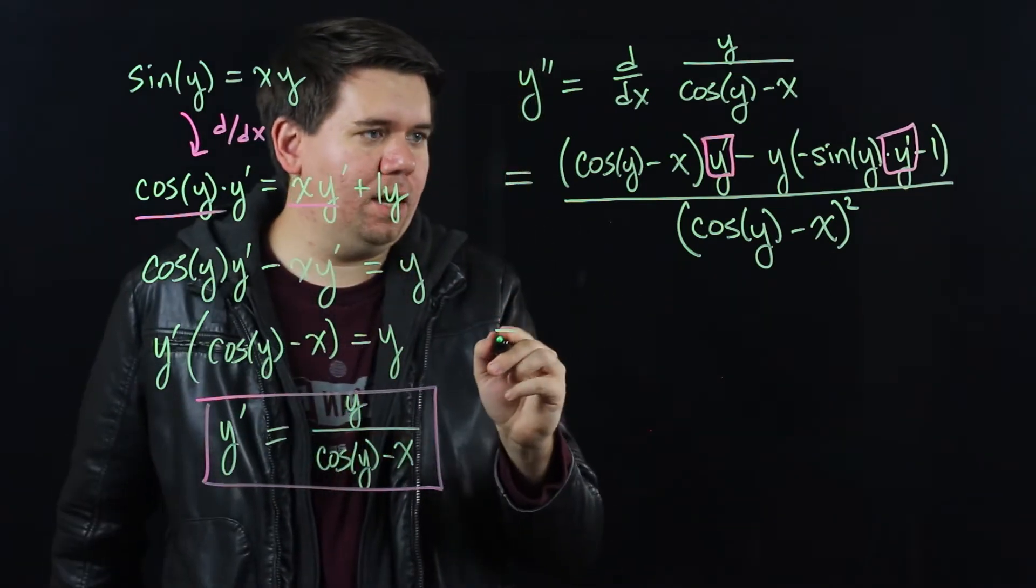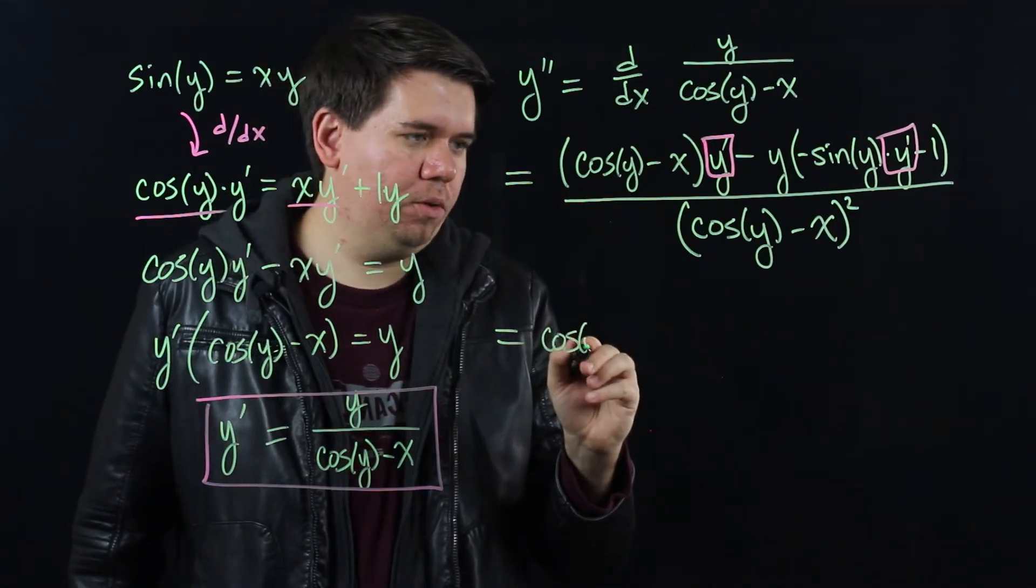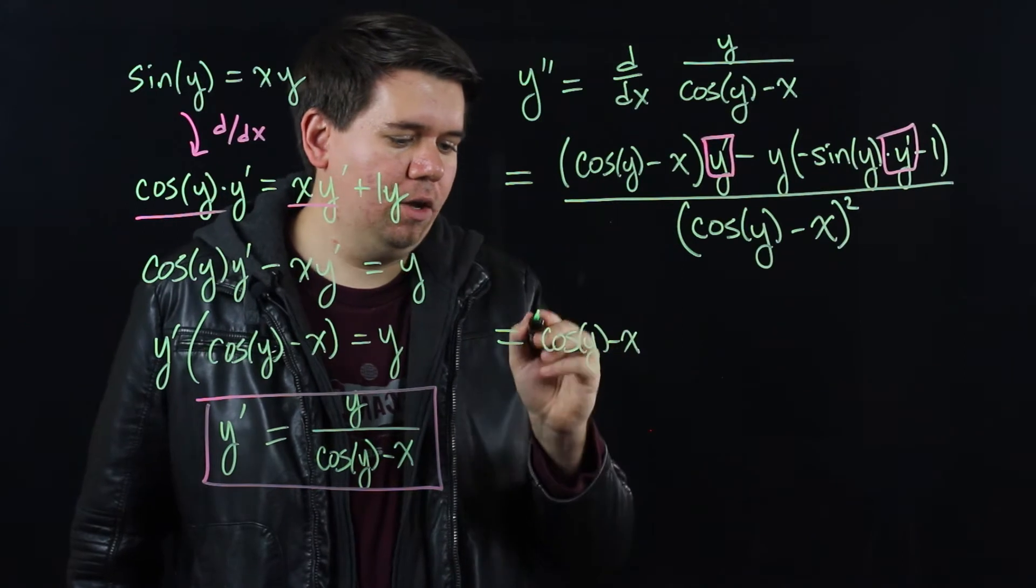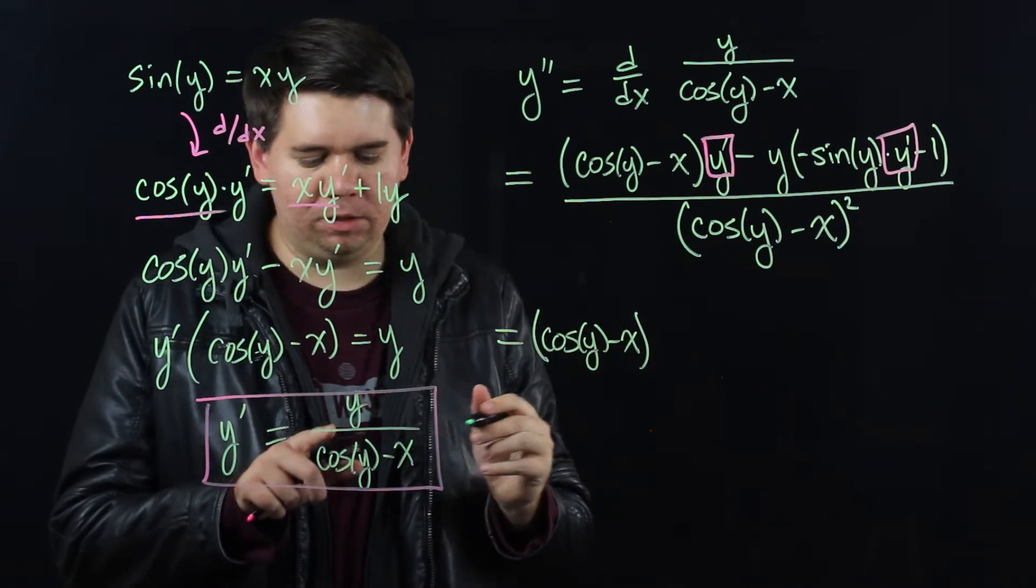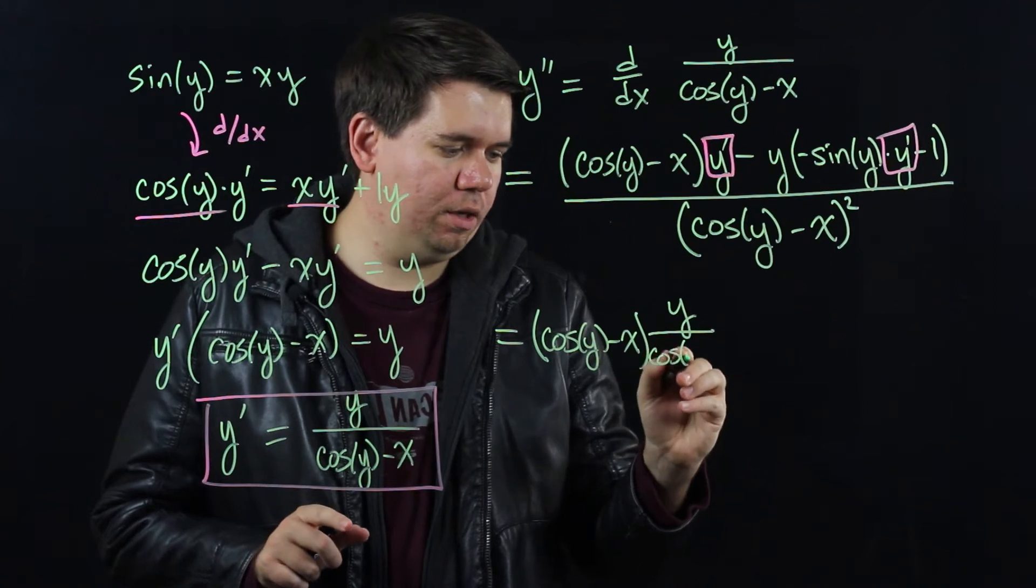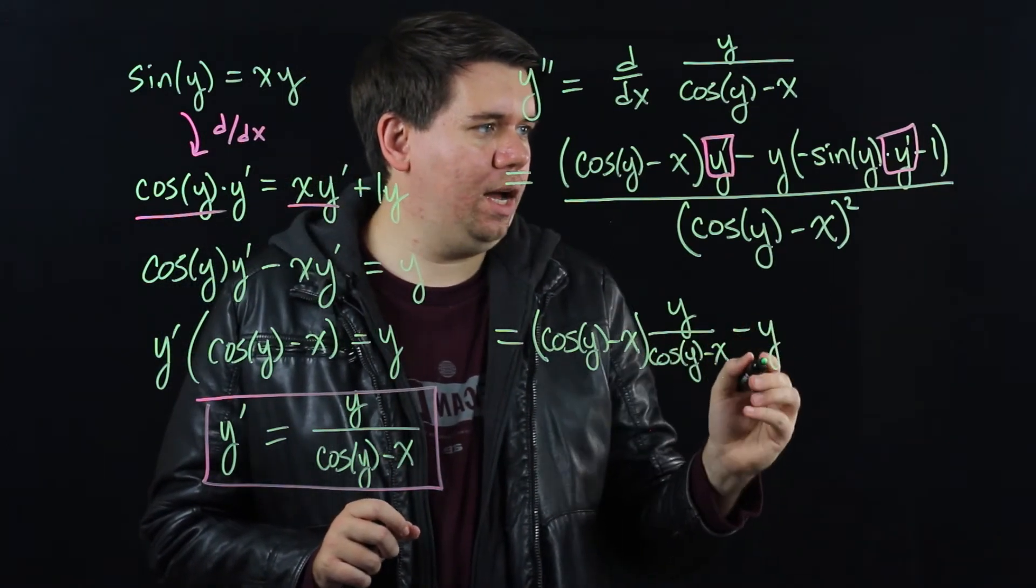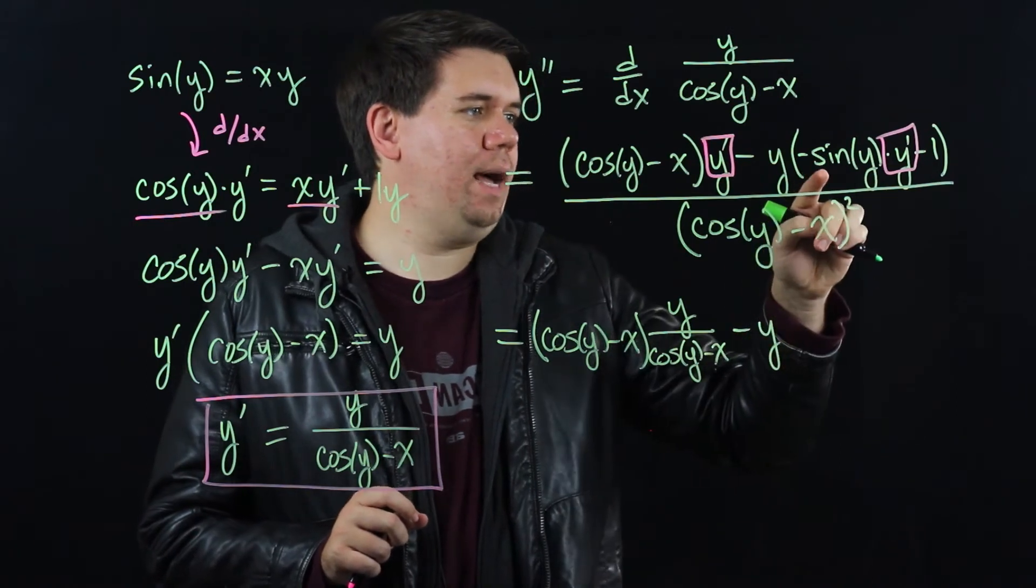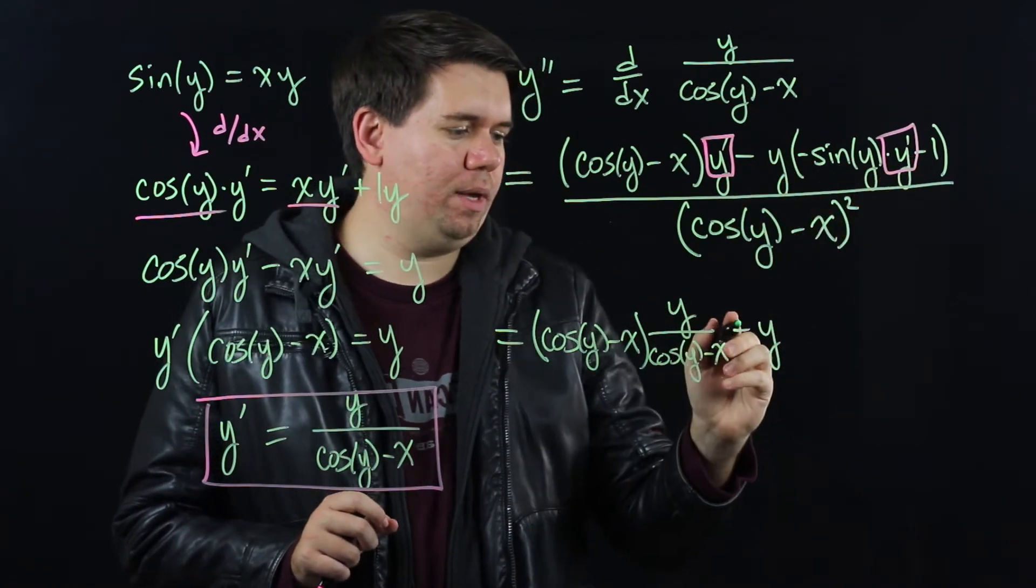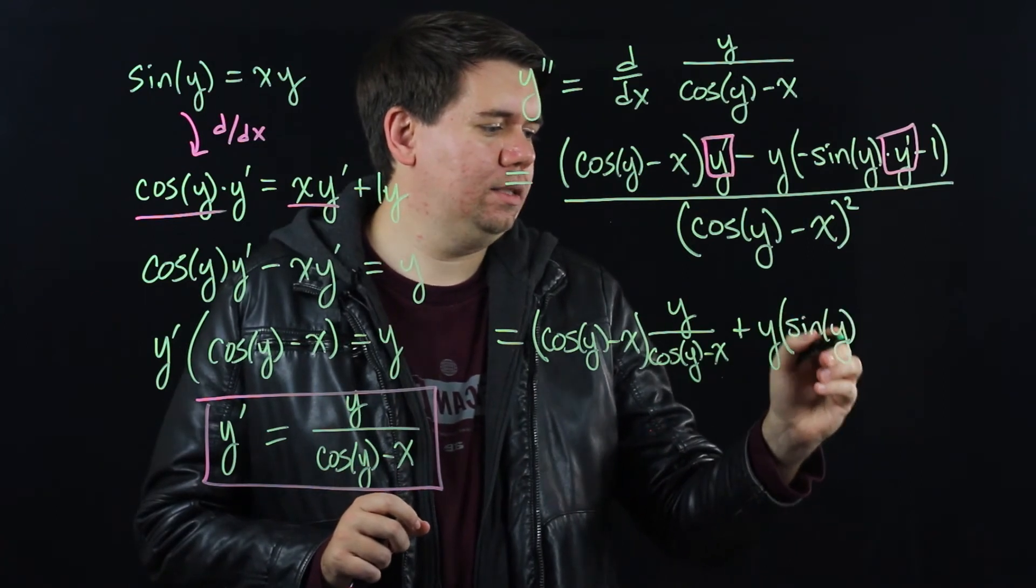So this becomes cosine of y minus x all times y prime, hence all times y over cosine of y minus x, minus y times, well that's a minus sign. Let me pull a minus out to make this plus sine of y times y prime.